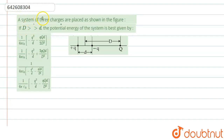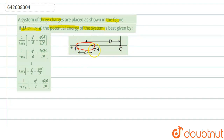The question says that a system of three charges is placed as shown in the figure. If capital D is greater than d, the potential energy of the system is best given by. In the picture, there are three charges: +q, -q, and capital Q. So we have three pairs: (+q and -q), (-q and capital Q), and (+q and capital Q).